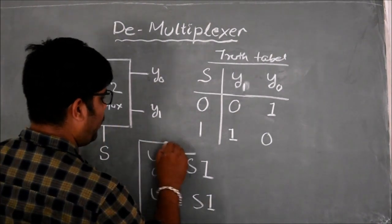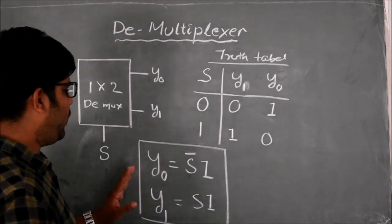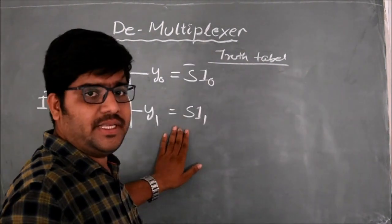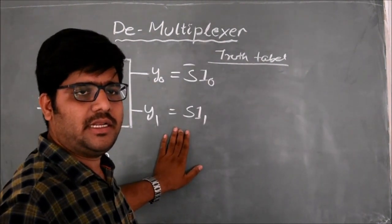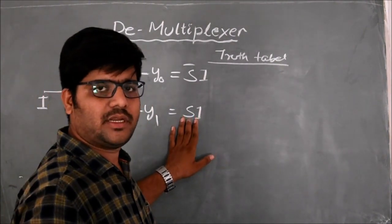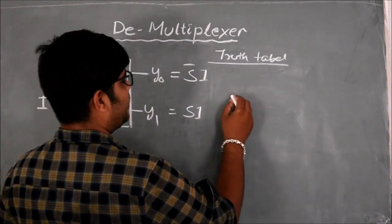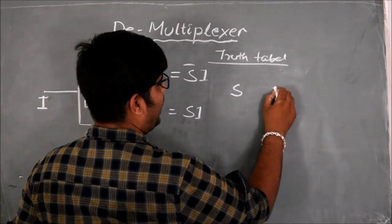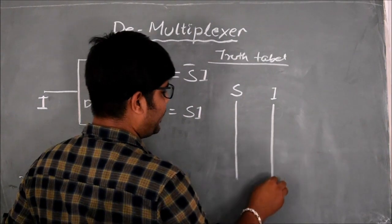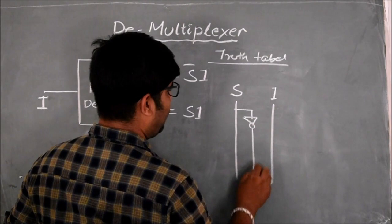This is the output function of a 1x2 demultiplexer. From this output equation we can design the internal circuit diagram of the demultiplexer. Let us consider this is S and this is I. This line represents S, this line represents I, and this line can be represented by S complement.